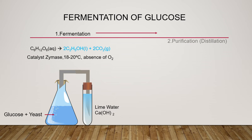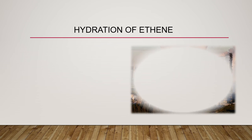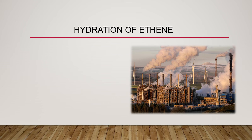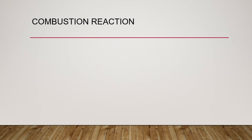The CO₂ produced in fermentation makes limewater cloudy. The ethanol produced by fermentation is purified by fractional distillation. The second method to produce ethanol is by hydration of ethene, also called catalytic hydration. Ethene is obtained from the cracking of petroleum fractions. The addition reaction combines ethene with water to produce ethanol. The process occurs at 300 degrees Celsius at a pressure of 60 atm, with phosphoric acid as the catalyst. The ethanol is condensed to form a liquid, and remaining unreacted ethene is recycled.